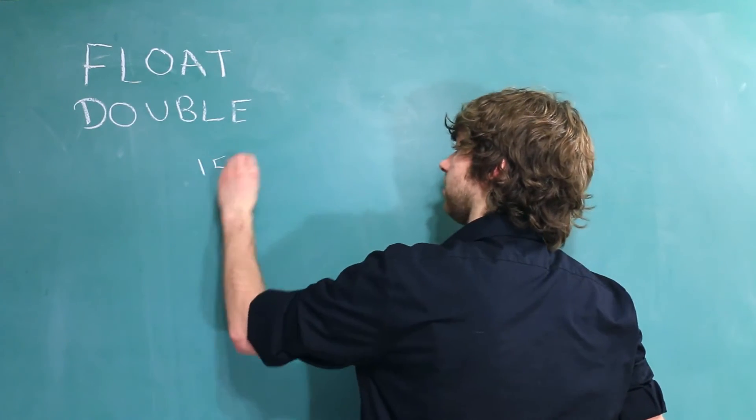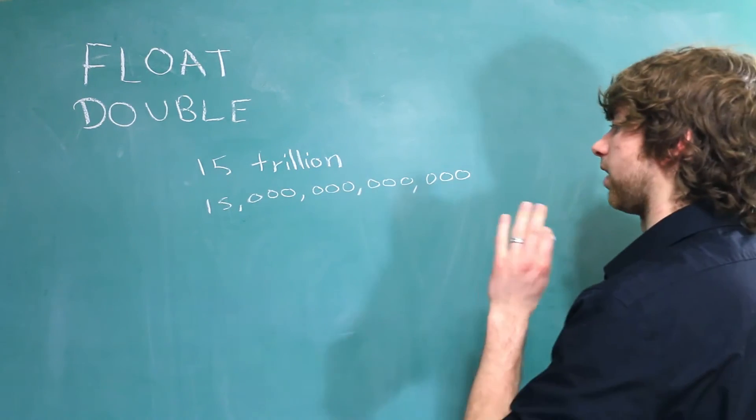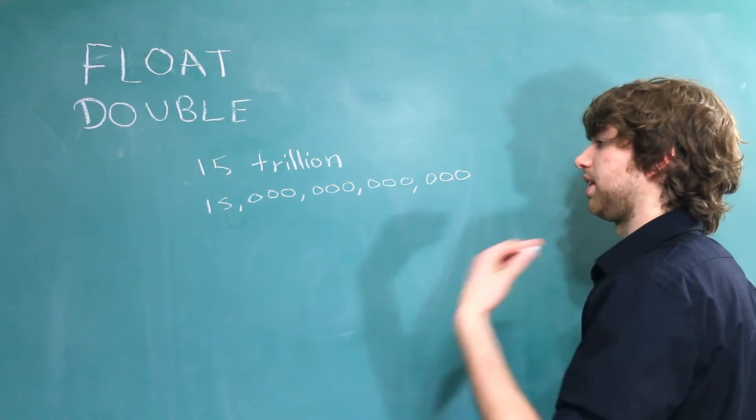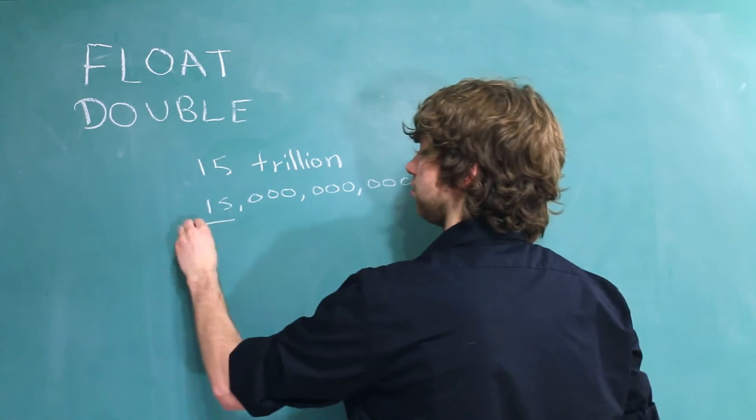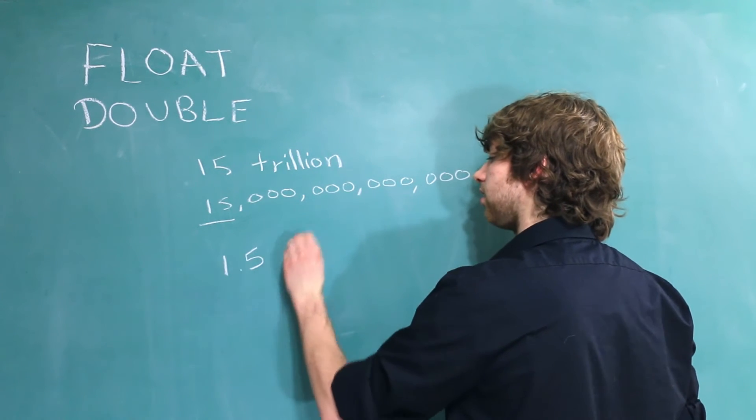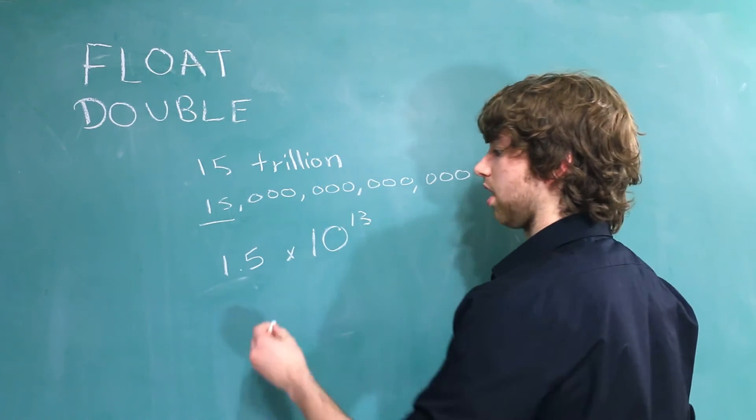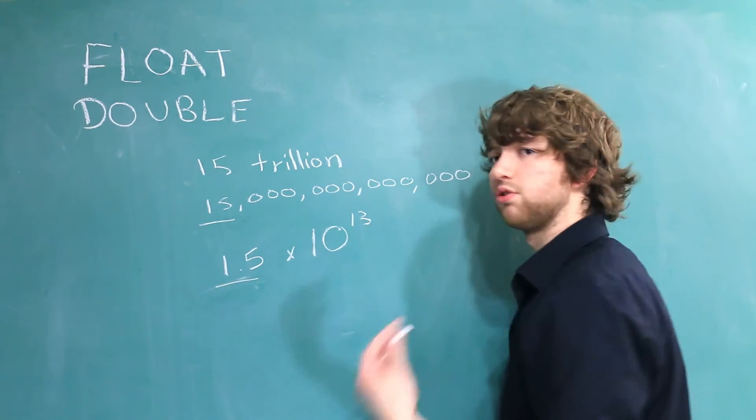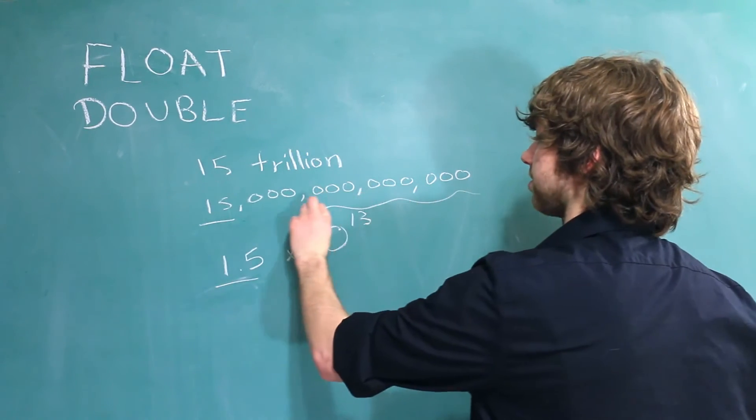Let's say you have the number 15 trillion. I believe that would be this. You can see we are storing a huge number, but the actual two numbers that are most important to preserve are these two right here. That's because we can represent this number as 1.5 times 10 to the 13. In this situation, we don't need a whole lot of precision because we're only storing two numbers that are going to really be important to us.